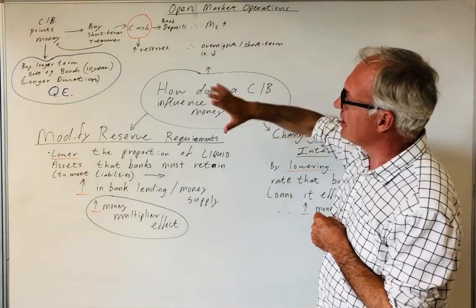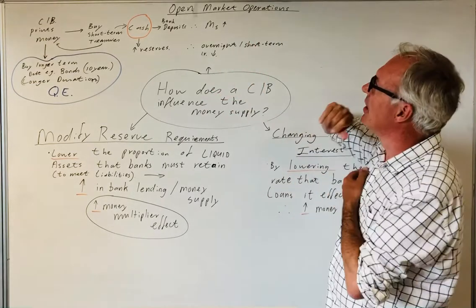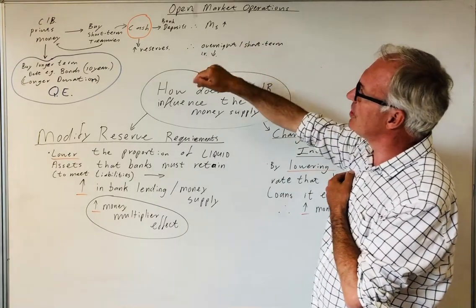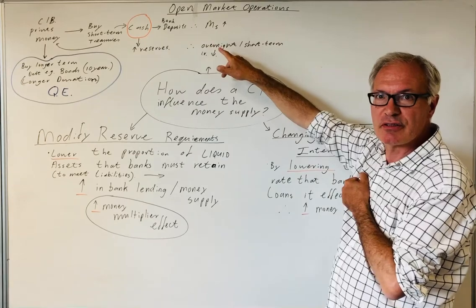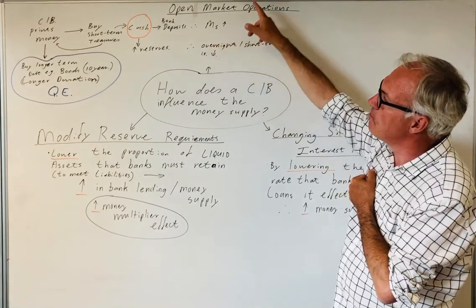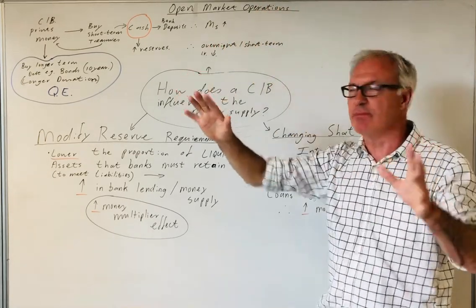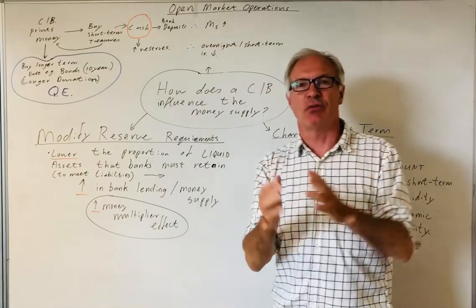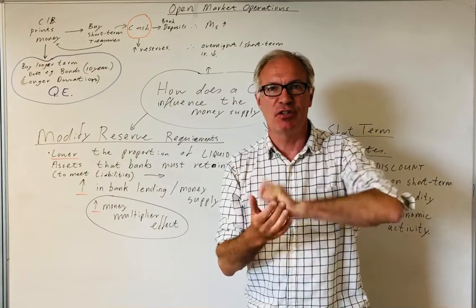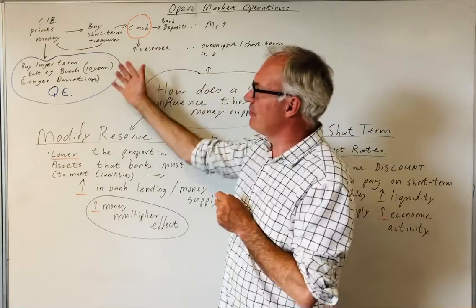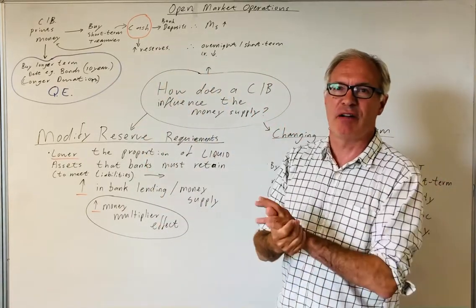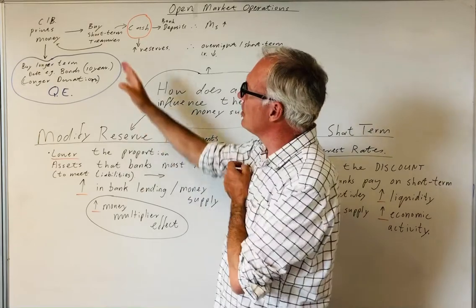Of course it could work the other way around, and what they do is they buy back short-term treasuries to reverse the process. Now a question might be, is this not a bit like quantitative easing? See the video on quantitative easing, but just to explain the difference, quantitative easing was introduced by the Bank of Japan really in the 1990s.